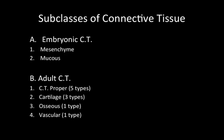Each type of adult connective tissue has some subtypes. Connective tissue proper has five subtypes that we'll look at. There are three types of cartilage. And luckily there's only one type of osseous or bone tissue and one type of vascular tissue.